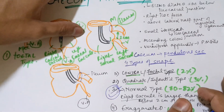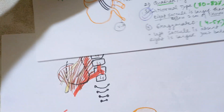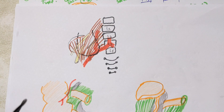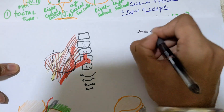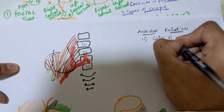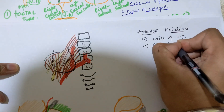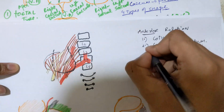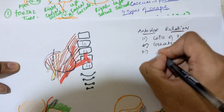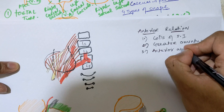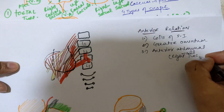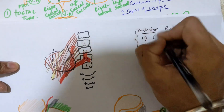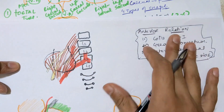Now we move on to the visceral relations of the cecum. Anteriorly, three main structures are present: first, the coils of the small intestine; second, the greater omentum (a peritoneum derivative); and third, the anterior abdominal wall on the right iliac side.